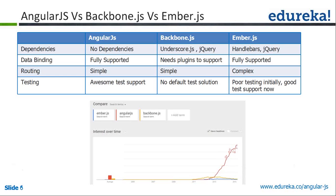Question: AngularJS v2 is going to be completely different from 1.3 — does it make sense to learn? Yes. Version 2 is somewhat different but not totally different from 1.3 or 1.4. If you want to migrate from 1.3 to v2, you have to follow certain structures — for example, instead of using $scope, you can use 'this', and instead of using controllers directly, you can use aliases.